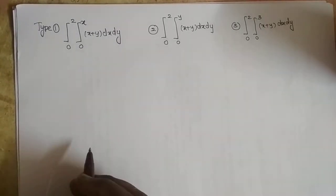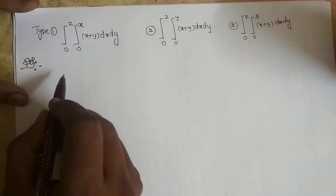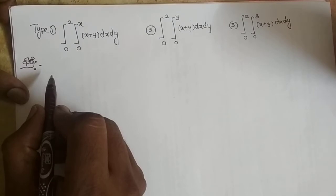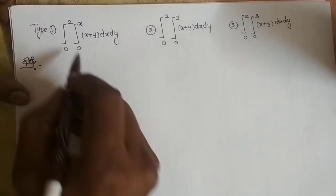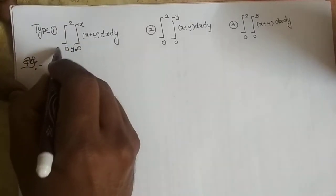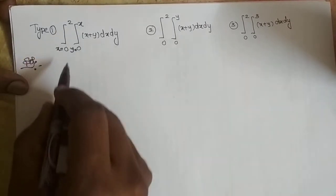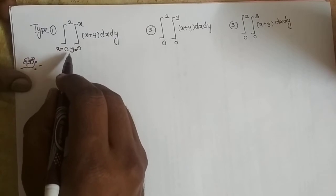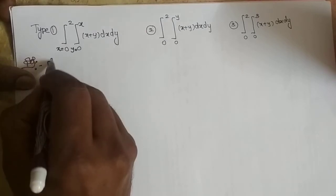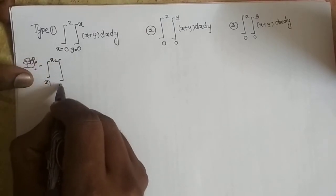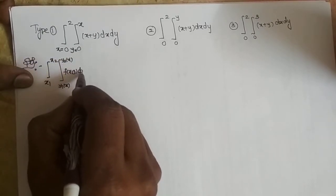Now I am going to solve one by one. First we should identify the limits which belong to x, which belong to y, and what is the boundary of the given double integral. In Type 1, y is in terms of x, and x is taken as boundary. The general form is: integral x1 to x2, integral y1(x) to y2(x), f(x, y) dy dx.